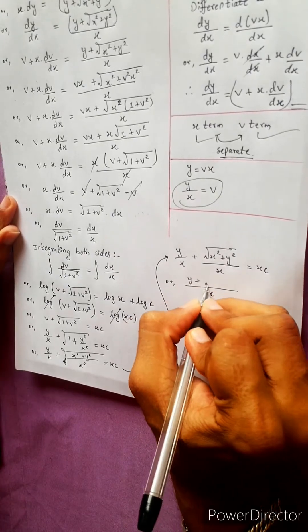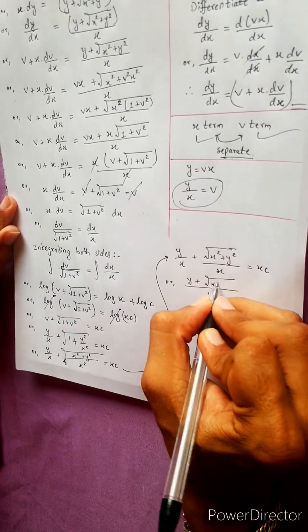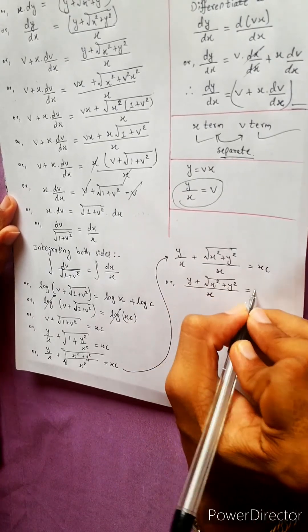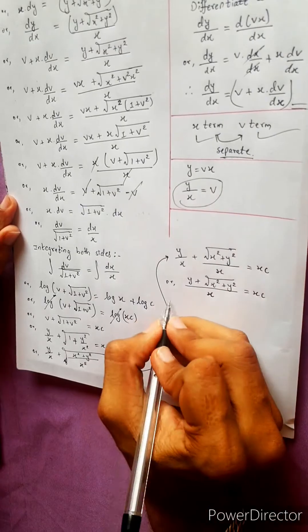Therefore the answer is: y plus under root of x squared plus y squared equals to xc.